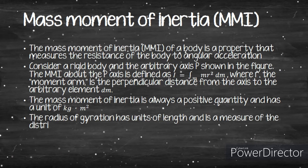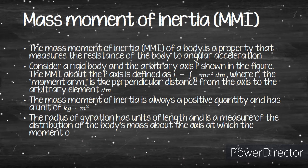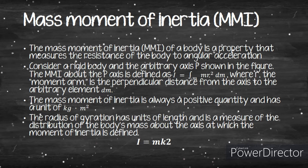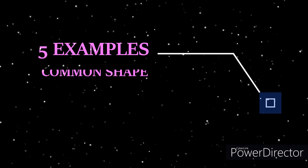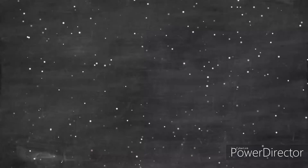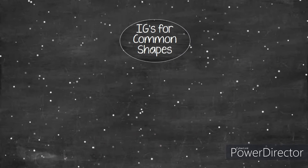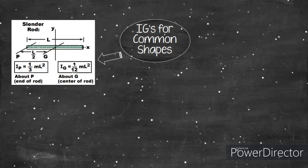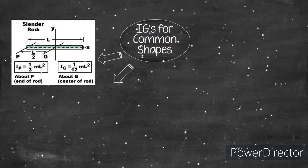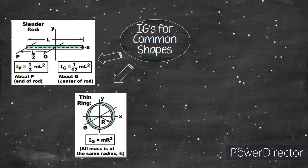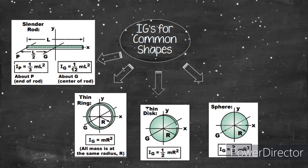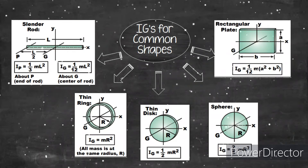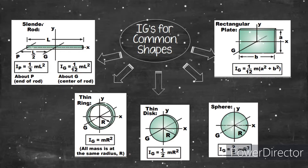The radius of gyration k is a measure of the distribution of the body mass about the axis, defined by I = mk². For common shapes, each has a different moment of inertia: for a cylinder rod, Ip = (1/3)mL² and Ig = (1/12)mL²; for a thin disk, Ig = (1/2)mL²; for a sphere, Ig = (2/5)mL²; and for a rectangle, Ig = (1/12)m(L² + L²).